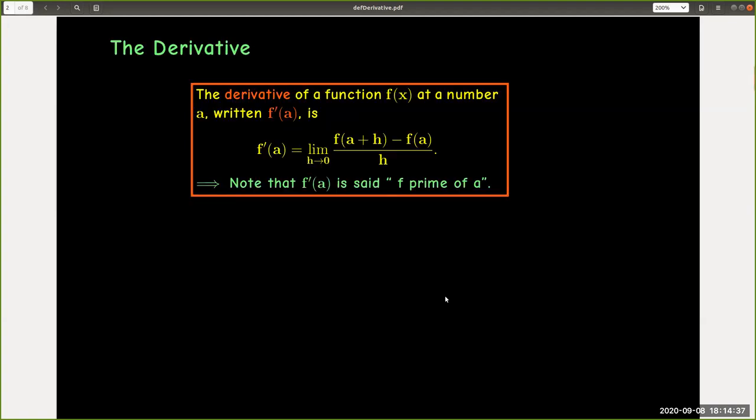The derivative of a function f(x) at a number a, written as f'(a), is the limit as h goes to zero of the quotient [f(a+h) - f(a)] / h. Note that f'(a) is said as 'f prime of a.'